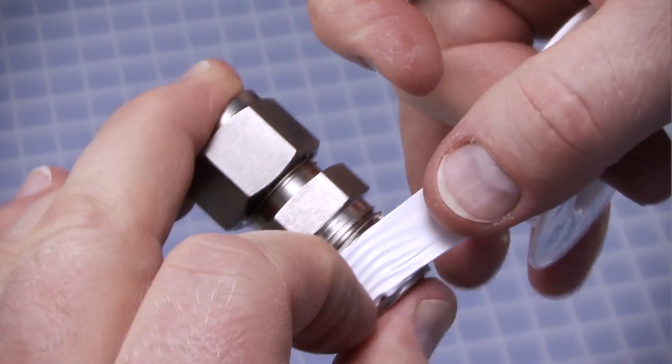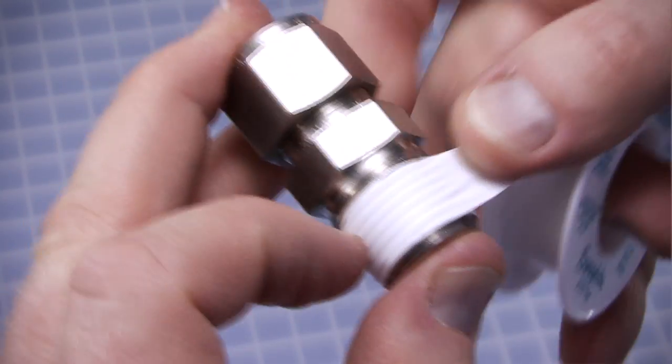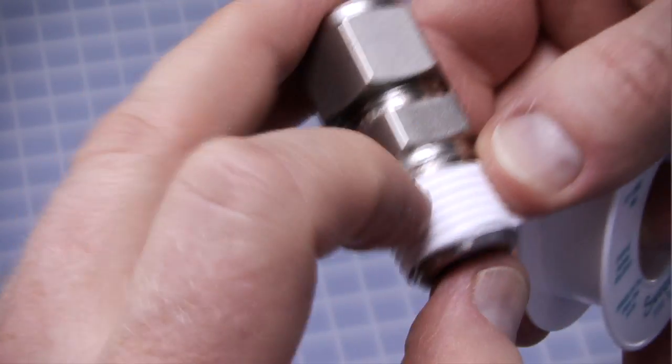While keeping the edge of the tape parallel to the face of the fitting, wrap two or three revolutions of tape. Draw the free end around the threads tautly so that it conforms to the threads.